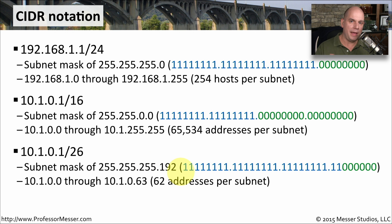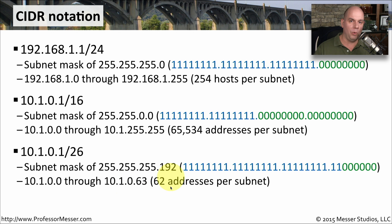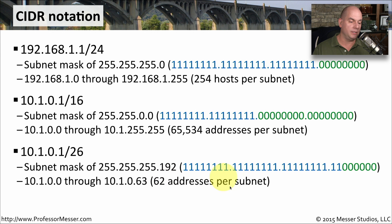Doing the math on that, we know that if we take those last six bits, we would have 64 addresses. Of course, one of those is the network address and the other is the broadcast, which gives us a total of 62 usable addresses per subnet.